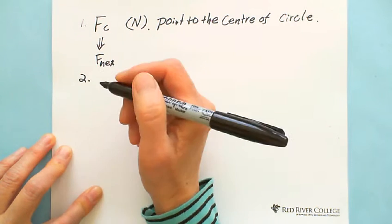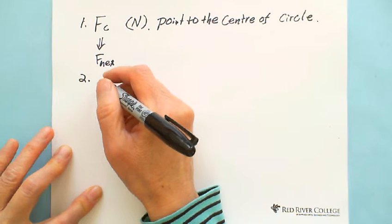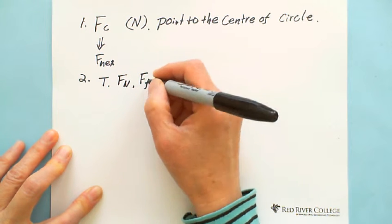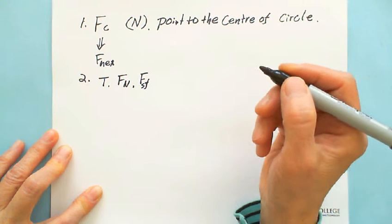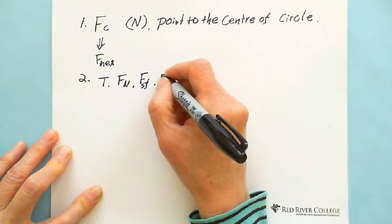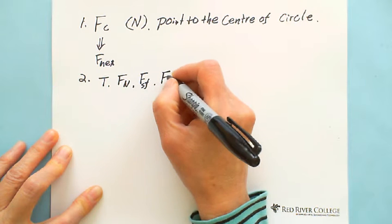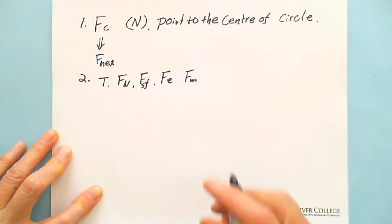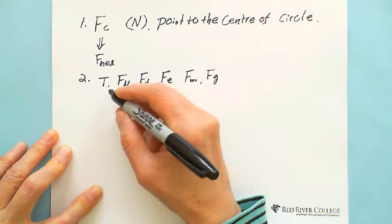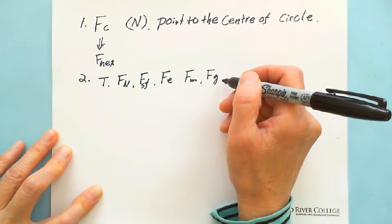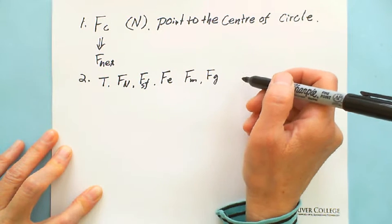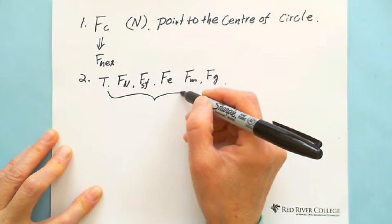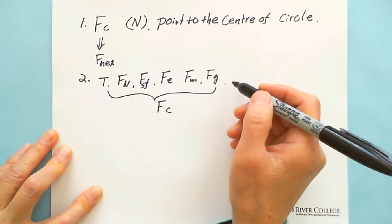What kind of force can be centripetal force? Tension force, normal force, and static friction force. Also electric force, electromagnetic force, and gravity. All these forces can be centripetal force, or the net force of two of them, depending on the situation. So the centripetal force comes from different forces, depending on the situation.